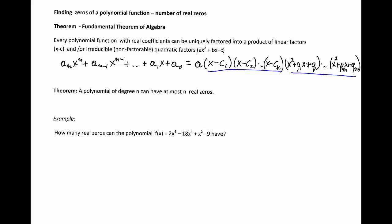This theorem tells us also that a polynomial of degree N can have at most N real zeros. Notice that if X minus C1 is a factor in this product, then C1 is a zero of the original polynomial. So we can have at most N factors X minus C in such factorization, because the degree of that polynomial is N, and therefore a polynomial of degree N can have at most N real zeros.